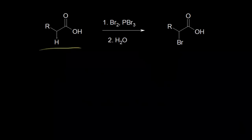If we start with a carboxylic acid that has at least one alpha proton on it — right here is our alpha carbon — we can see in this reaction we're going to substitute in a bromine at the alpha position instead of a hydrogen. This is alpha substitution of a carboxylic acid, and this is called the Hell-Volhard-Zielinski reaction.